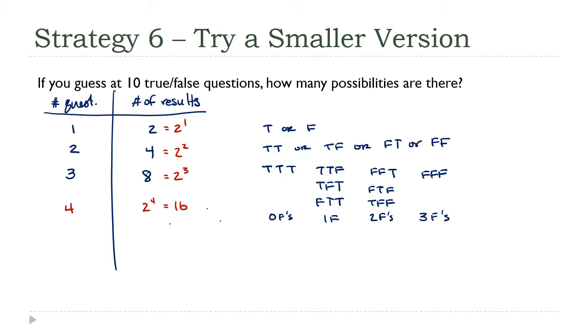Are you seeing the pattern? The number of questions becomes the exponent. If my pattern holds, and I'm pretty comfortable it's going to, 10 questions would be two to the 10th possible answers. That's 1,024—there's my final result.